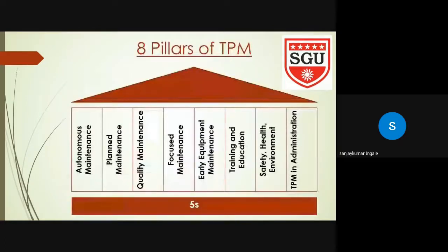Let's see what are the eight pillars of TPM. They are: first, Autonomous Maintenance; second, Planned Maintenance; third, Quality Maintenance; fourth, Focused Improvement; fifth, Early Equipment Management; sixth, Training and Education; seventh, Health, Safety and Environment; and lastly, TPM in Administration.